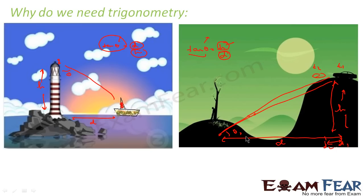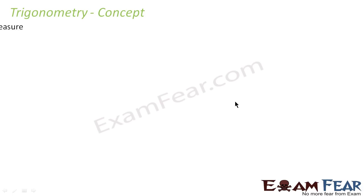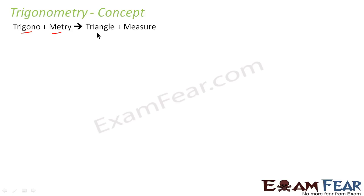If you have not understood this part, don't worry — we'll cover it in detail in trigonometry and your concepts will be clear. Just know that we can do these things with trigonometry. Now, what is trigonometry? If you break the word, it is 'trigono' plus 'metry.' Trigonon means triangle and metry means measurement — that is, it is nothing but the measurement of a triangle.